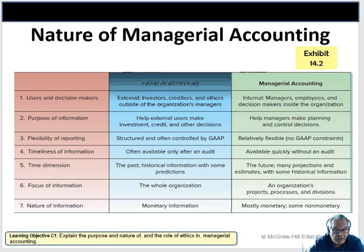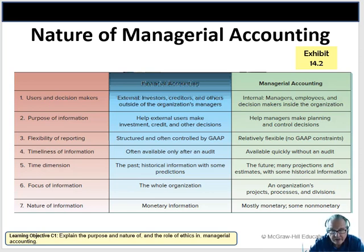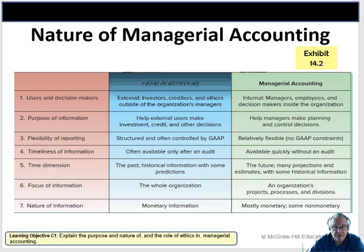The information in managerial accounting is more summarized or more detailed depending on need. In financial accounting, if we were Nordstrom's, we'd provide information to the investment community for the whole organization, not just individual stores. But if I were the manager of Nordstrom's at the Cerritos Mall, I only care about my store — it can be very detailed and individualized. Financial accounting is monetary, but managerial accounting information can be monetary or, as with the American Airlines example, non-monetary.